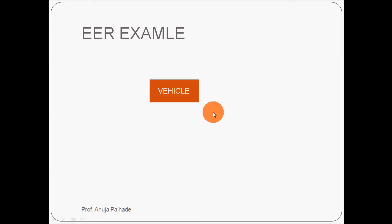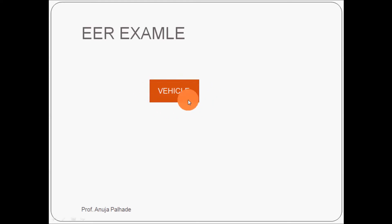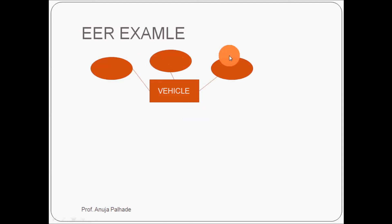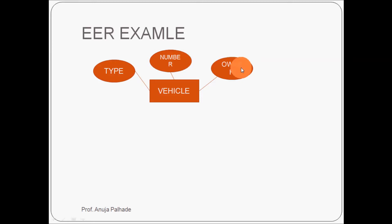Students, here I am taking one entity. You can see a vehicle entity I have taken here. For any entity, attributes are there. So let's add some attributes for vehicle: the names will be like type, number, or owner. These are the attributes for any vehicle — any vehicle has its type, unique number, and unique owner.